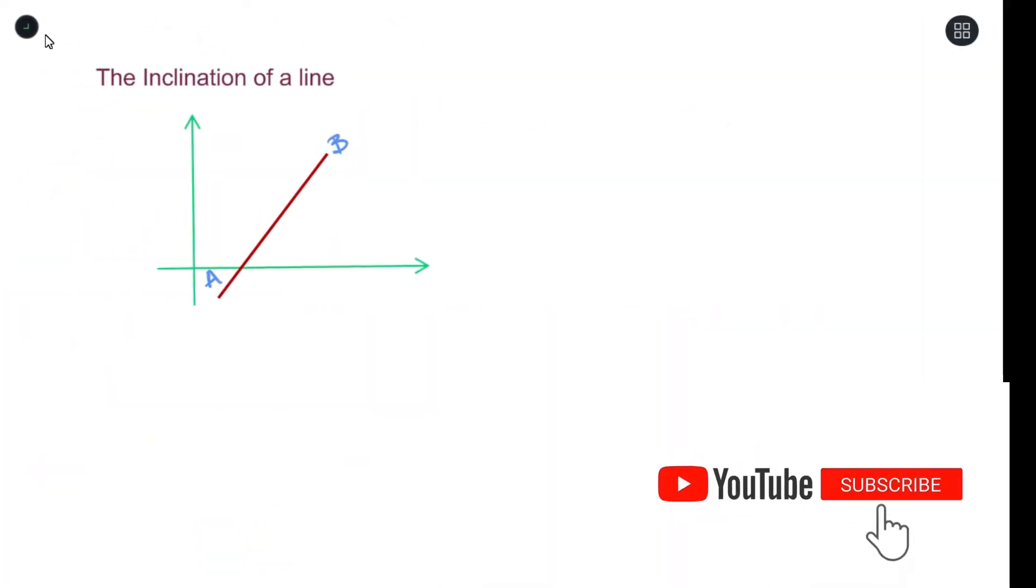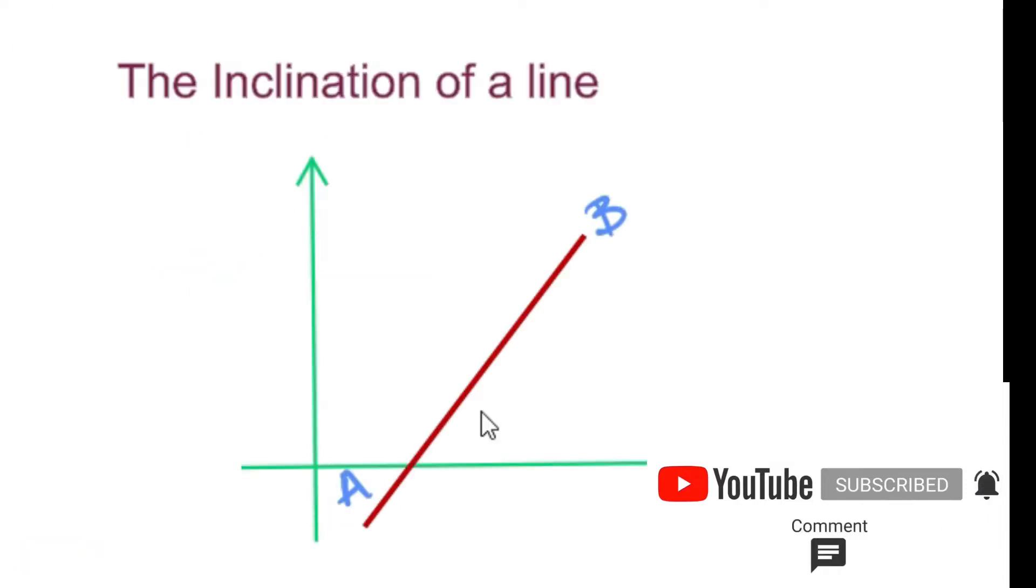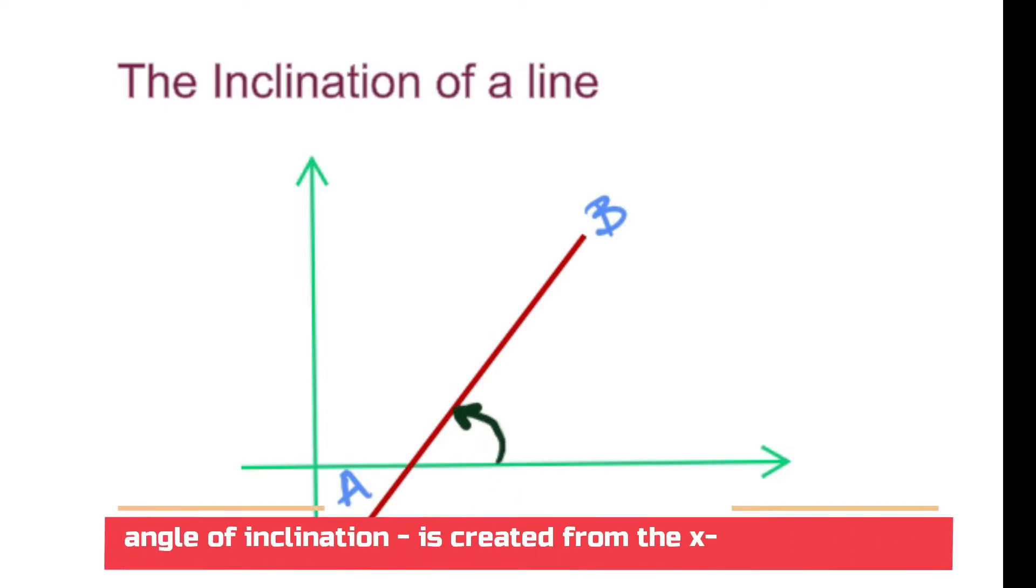So let us talk about the inclination of the line. We have this line over here which is AB and we want to figure out what the angle of inclination is or what the inclination of this line is. The angle you draw must always be anti-clockwise towards the line. So it must start from here and it must end on the line over there. So let us call this theta.